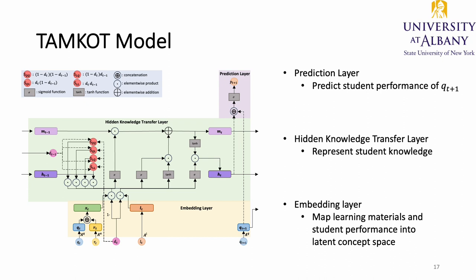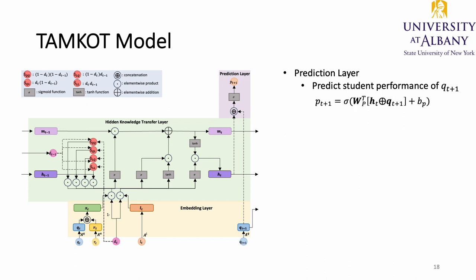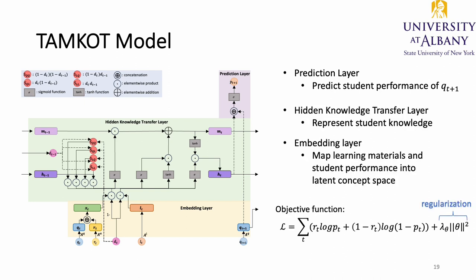Finally, we have a prediction layer. In this layer, we concatenate the hidden knowledge state ht with the embedding of the next question and pass it to a fully connected layer with sigmoid activation function to predict student upcoming performance pt+1 for question qt+1. For the objective function, we learn the parameters of TOMCOT by minimizing the regularized binary cross-entropy loss, where RT is the actual student performance and theta denotes all learnable parameters.